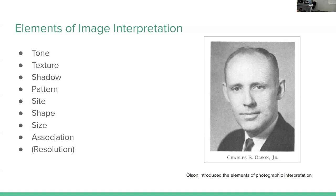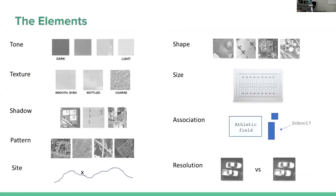Mr. Olsen introduced the elements of photographic interpretation, and these are all the different things that we use intuitively to understand — oh, I'm going to call that a house, I'm going to call that a boat — and label it with our tags and key-value pairs in the data. When we talk about this in a remote sensing class, you can think about tone, texture, and all these things that help you understand what you're seeing when you map from satellite data.